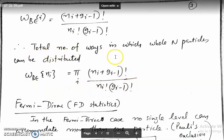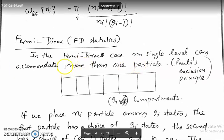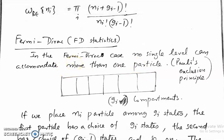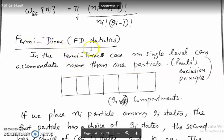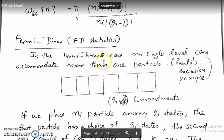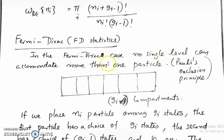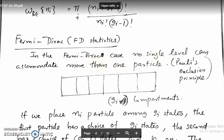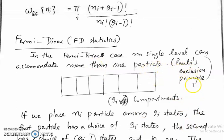Now we consider the next quantum case: the Fermi-Dirac case. In the Fermi-Dirac case, no single particle level can accommodate more than one particle. This is because it obeys the Pauli exclusion principle.